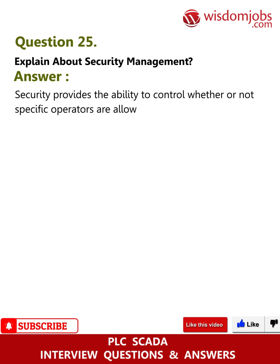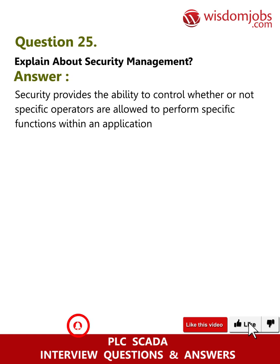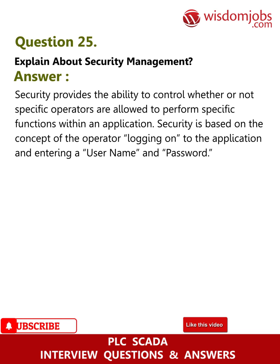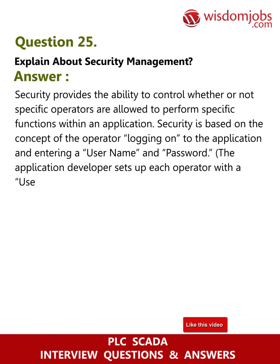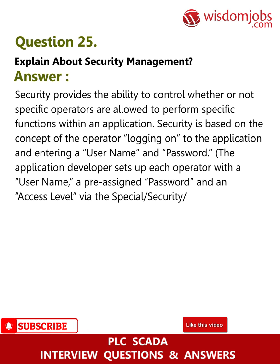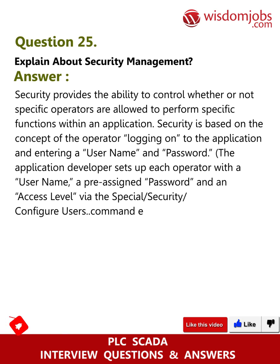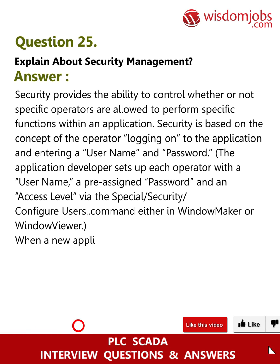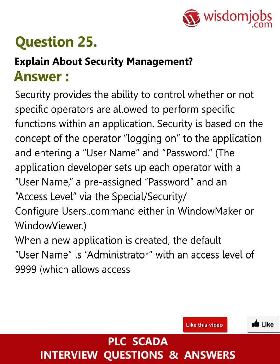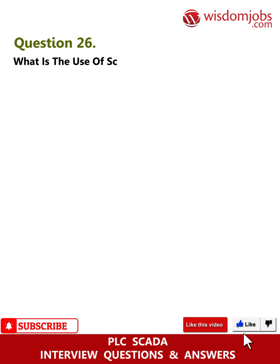Question 25: Explain about security management. Answer: Security provides the ability to control whether or not specific operators are allowed to perform specific functions within an application. Security is based on the concept of the operator logging on to the application and entering a username and password. The application developer sets up each operator with a username, a pre-assigned password, and an access level via the Special/Security/Configure Users command, either in Window Maker or Window Viewer. When a new application is created, the default username is 'administrator' with an access level of 9999, which allows access to all security commands.